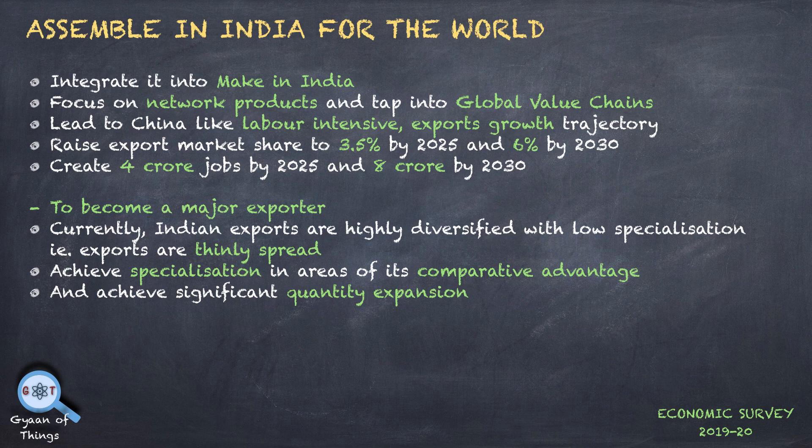The Economic Survey has prescribed 'Assemble in India for the World' to integrate with 'Make in India'. The focus should be on network products and tapping into global value chains. This would give India a labor-intensive exports growth trajectory similar to China. India can expand its export market share to 3.5% by 2025 and produce 4 crore jobs. To become a major exporter, India needs to specialize in areas where it has comparative advantage.